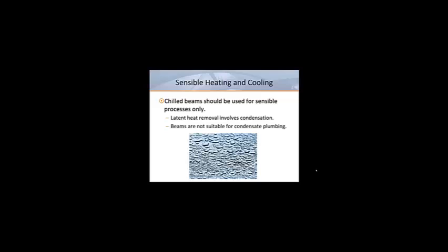Chilled beams should only be used for sensible heating and cooling. They can raise or lower the air temperature of a room, but they cannot remove moisture from room air. Humidity reduction is a latent process that involves condensation. Since a chilled beam is located in a room, usually at or just below the ceiling, it is unsuitable for condensate piping.